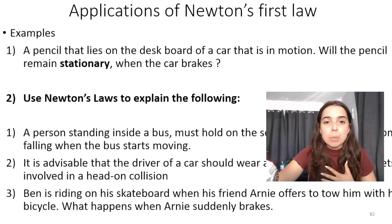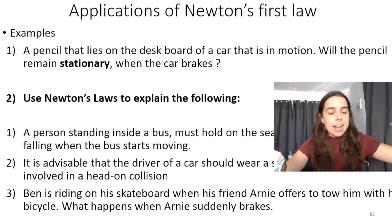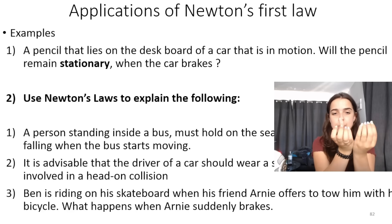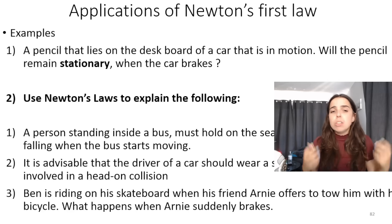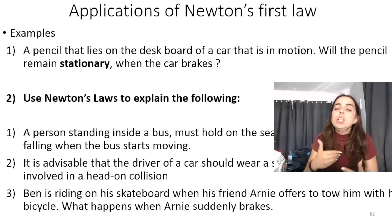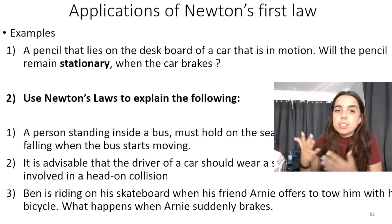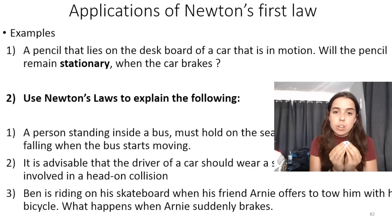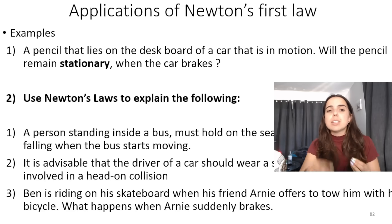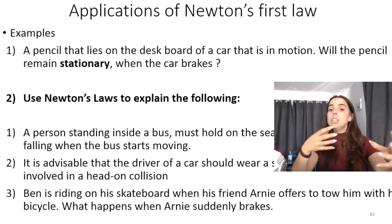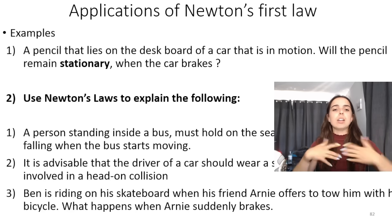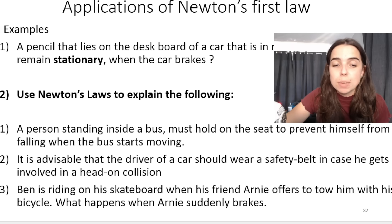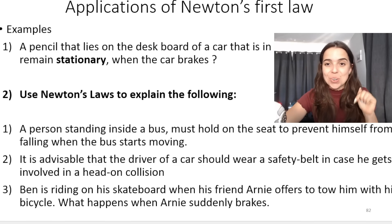For example, if a pencil lies on the dashboard of a car that is in motion, the pencil will not remain stationary when the car brakes, unless something is holding onto it. The pencil will want to continue at the same constant velocity according to Newton's first law. When the car's velocity decreases, the pencil's velocity won't — it'll continue at the same velocity and roll off the dashboard. You can use that same argument for all similar scenarios.